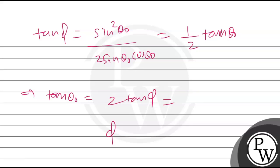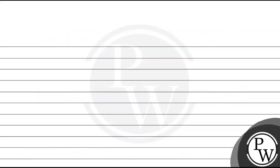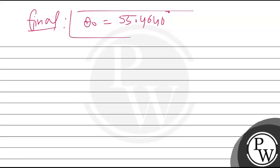Now, substituting phi = 36 degrees as given in the question, we can write theta-0 = tan⁻¹(2·tan(36°)), which equals 55.46 degrees. So our final answer is: the launch angle theta-0 equals 55.46 degrees. This is the required angle for the projectile motion.